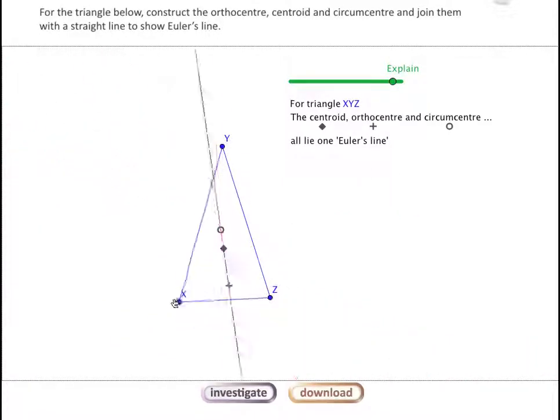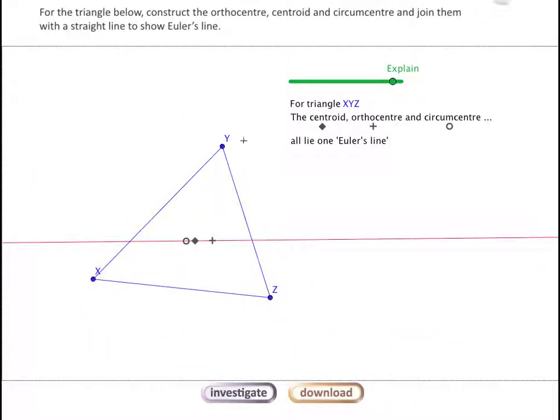Whether the centers are inside the triangle or outside of it, we can always draw a straight line through the centers. This line is known as Euler's line, after the mathematician who discovered that property of triangle centers, that they can always exist on a straight line.